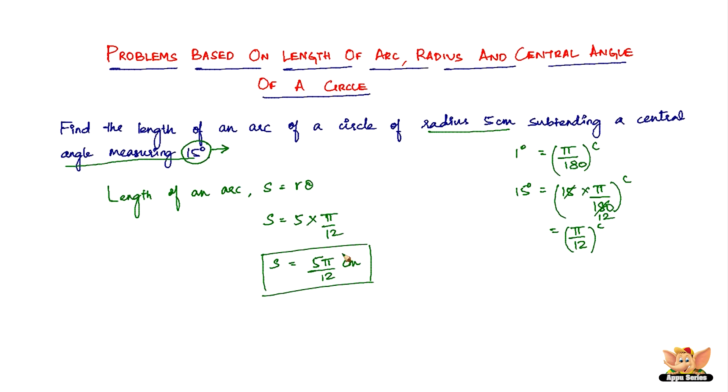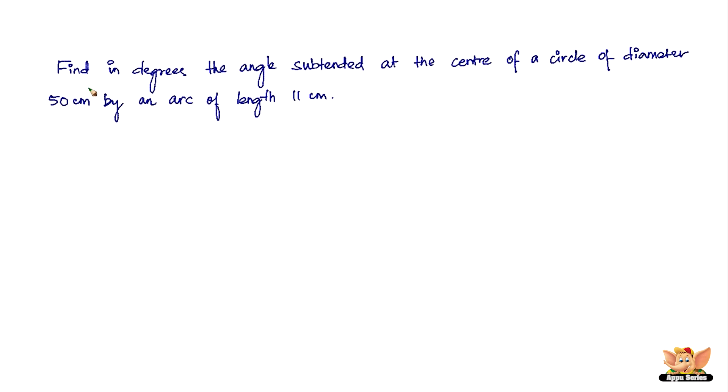So this concludes this problem. Let's quickly solve another problem before we conclude this video. Here we've got another question which says, find in degrees the angle subtended at the center of a circle of diameter 50 cm by an arc of length 11 cm.